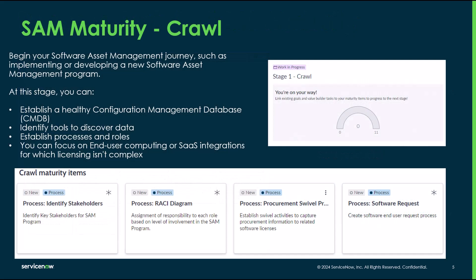The first phase of the maturity assessment is the crawl phase. This is where you begin your SAM journey and do things like implementing or developing your program. This is where you want to look at establishing a healthy CMDB — you really want to find those tools that are out there in your environment that have the data you need, like your end user compute tools, maybe usage tools, maybe what kind of SaaS portals you can think about integrating. So really identify where that data is.